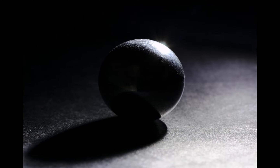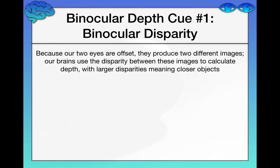Those are your monocular depth cues — you can perceive them with one eye. Binocular depth cues require two eyes; if you cover one eye, you literally cannot use these cues to judge depth. The first is called binocular disparity. Because our two eyes are offset, they produce two different images. Your brain combines them into one seamless experience, but in reality it's receiving two different images. The disparity between those two images tells you how far away an object is — very large disparities mean the object is much closer, while an object very far away produces very little disparity.